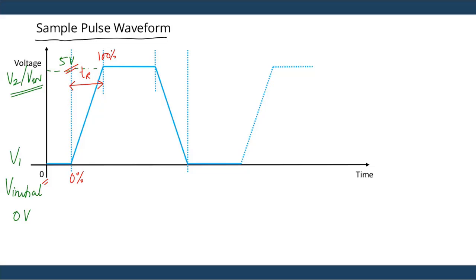You may have read that rise time is measured from 10% to 90% of the voltage value. That is true, but note that here we are not measuring the rise time — we are setting it. Since we are setting the rise time, we are considering the value over the entire swing from 0% to 100%.